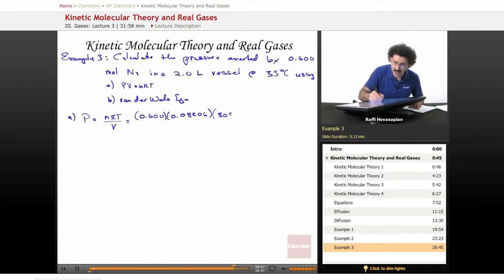And then, 308 Kelvin should be for 35 degrees Celsius. And our volume is 2.0 liters. We end up with 7.58 atmospheres. So that's pretty high pressure.